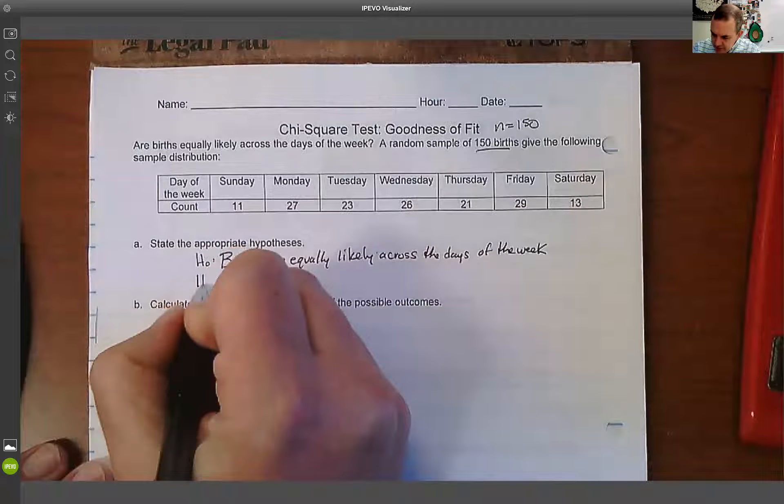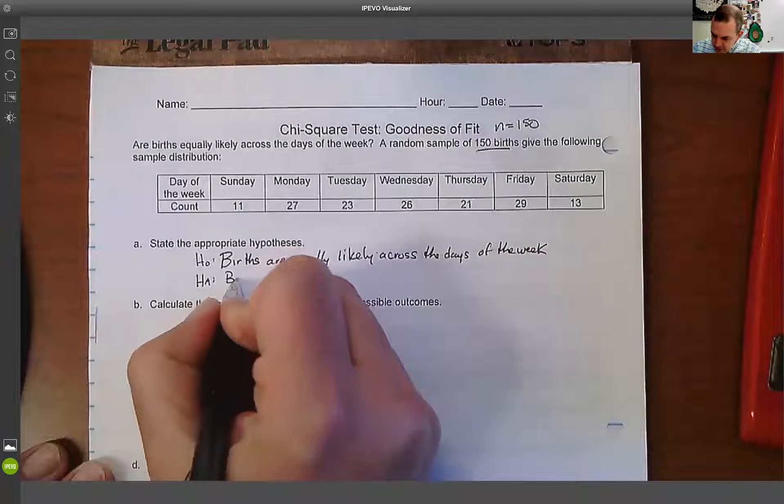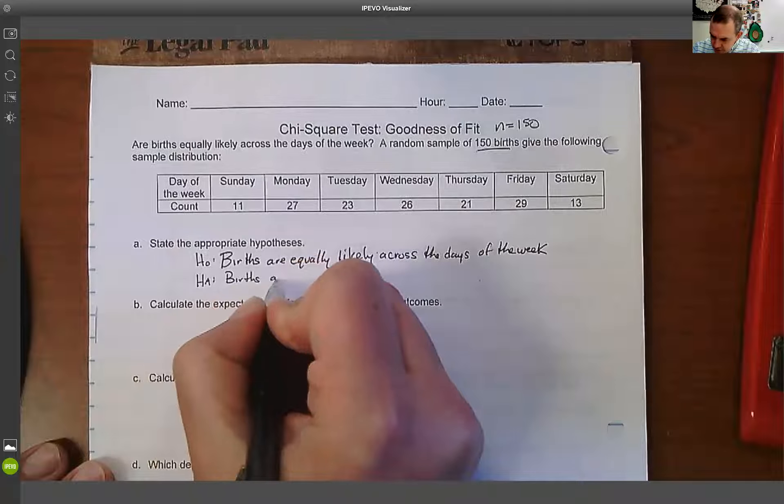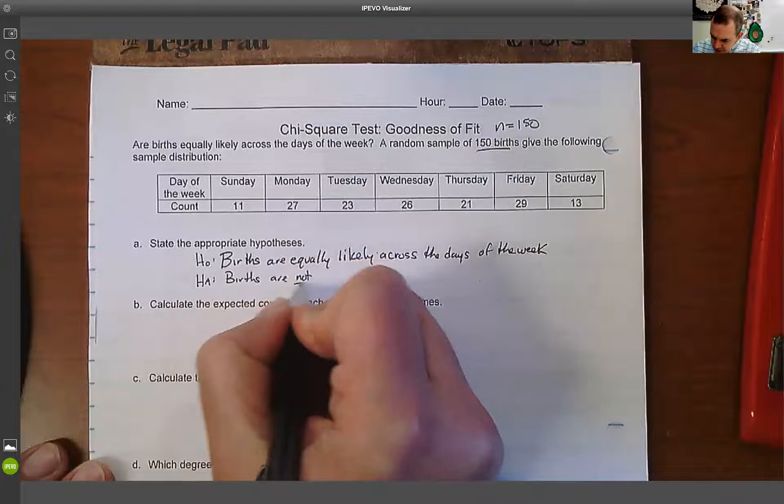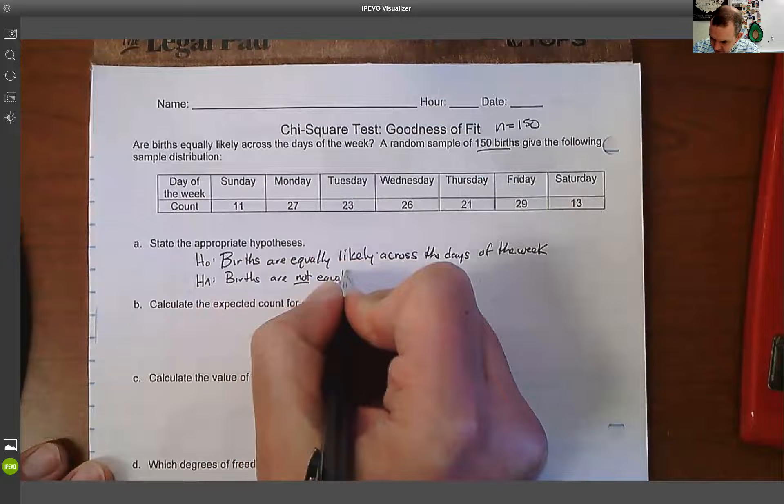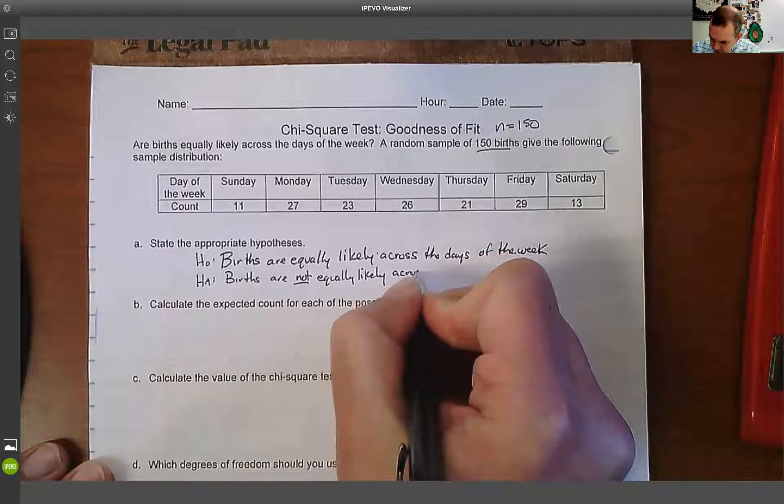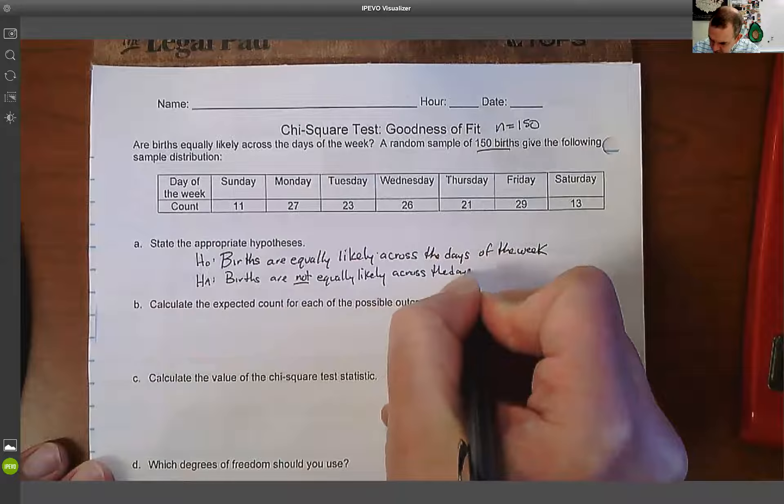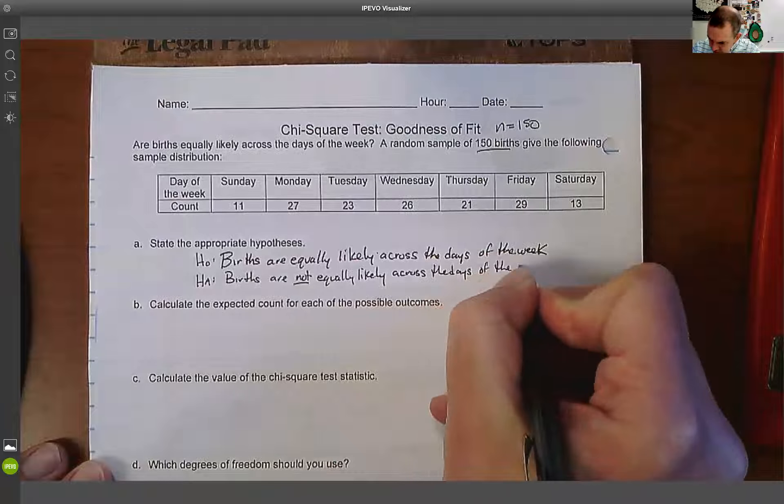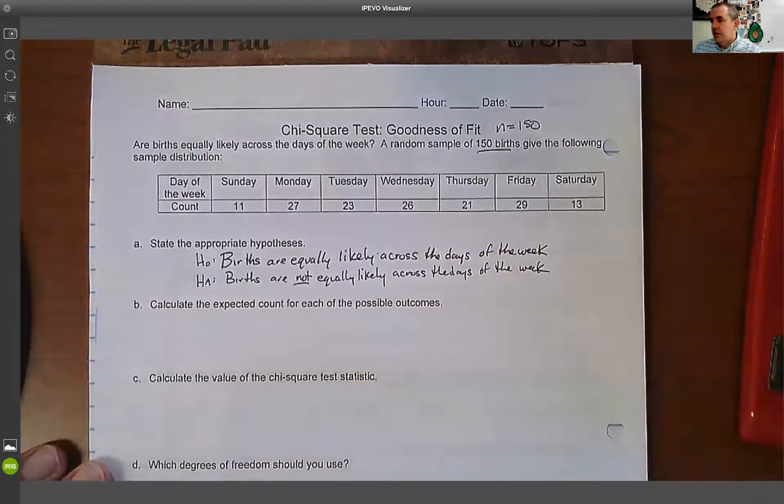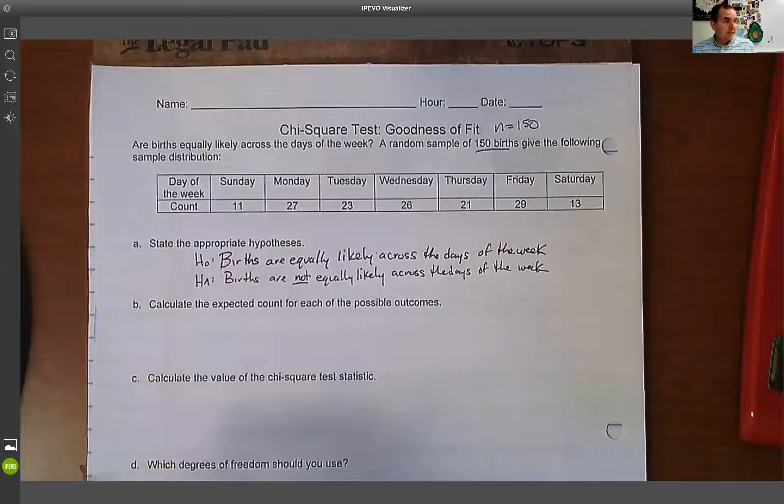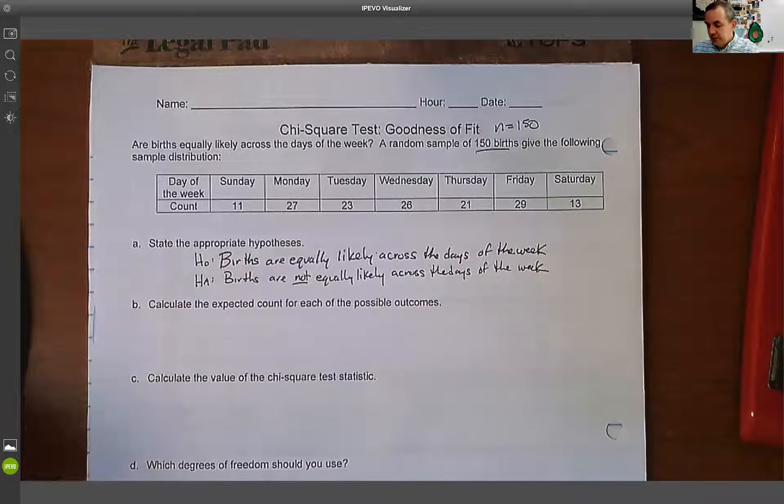And our alternative hypothesis is going to be that births are not equally likely. So there's our null and our alternative. We're going to assume that everything is the same and we're going to try and prove that something's different.